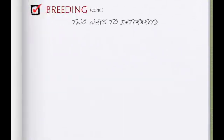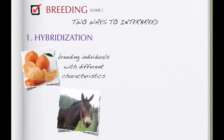There are two ways you can interbreed organisms. You can do what's called hybridization — that means you basically breed different characteristics together. For example, you can have a horse and donkey, which are two different organisms, to make a mule. Or you can just crossbreed, like dogs. If you want dogs to look a certain way, you can take a large dog and a small dog to make a medium dog.